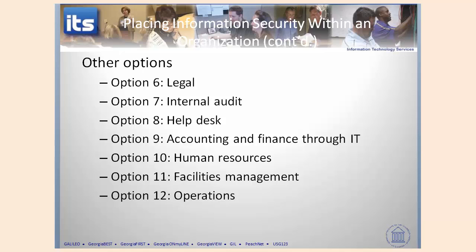This concludes this video on where to place information security groups — the CISO — within an organizational structure. We looked at four different diagram options and about six other broad options within that space, and talked about some of the key considerations. Again, you want to be consistent with your organizational culture. During the next video, we're going to start looking at the components of a security program and the needs within an organization for how you structure that. I'll see you — or at least you'll hear me — in the next video.